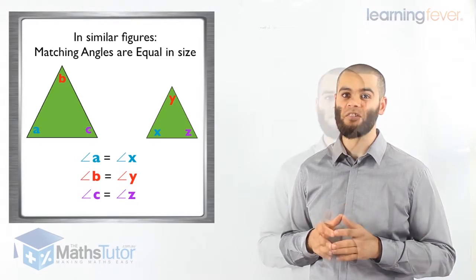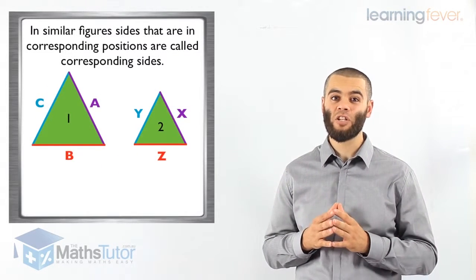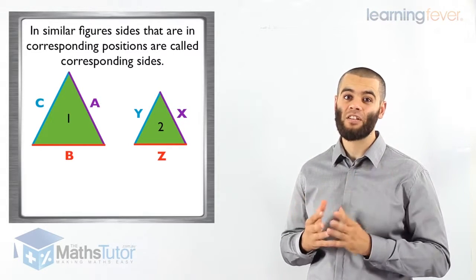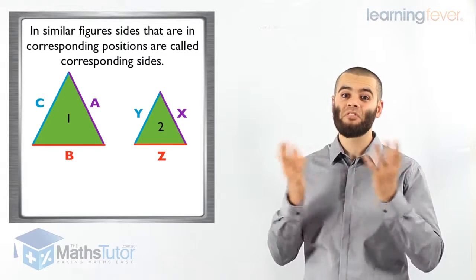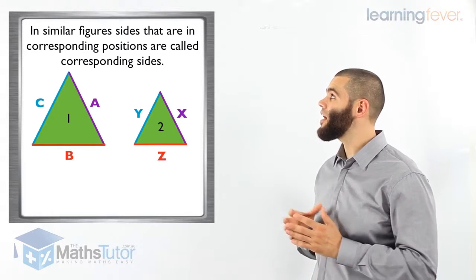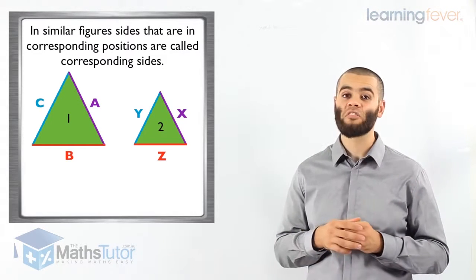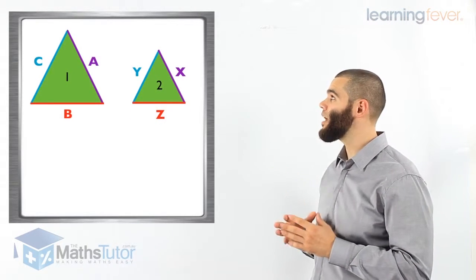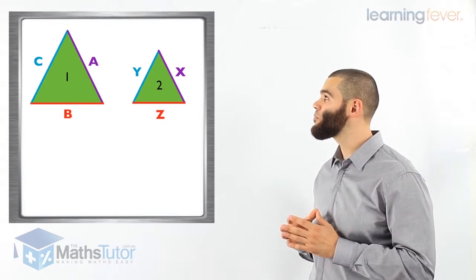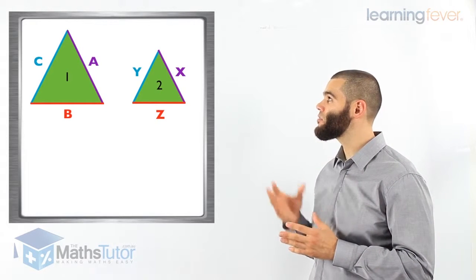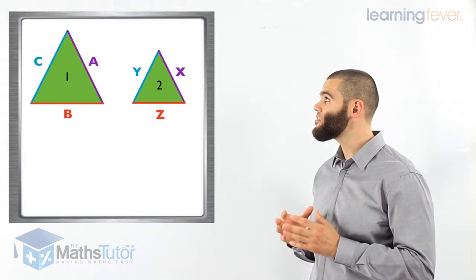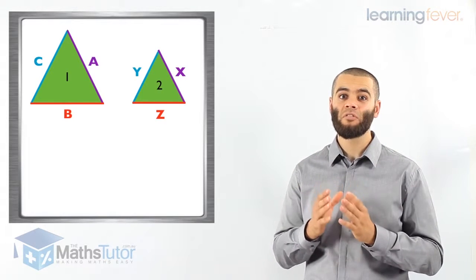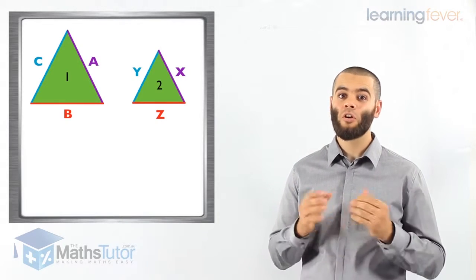Now let's look at some more information. In similar figures, sides also have relationships as well. We can see here that we have two triangles — the triangles are similar figures; one is just larger than the other, same shape but just different size. In similar figures, sides that are in corresponding positions are called corresponding sides. Side C, marked in blue, corresponds with Y from the other triangle. B corresponds with Z, and side A corresponds with X. They are in corresponding positions — they are called corresponding sides.